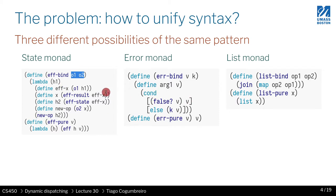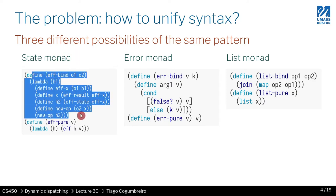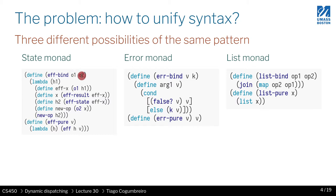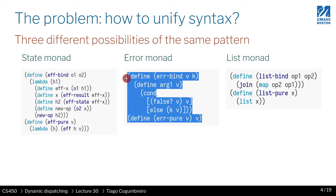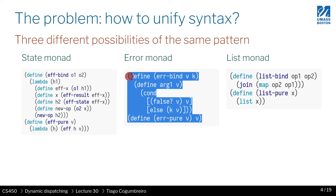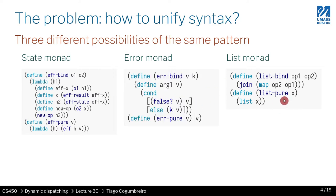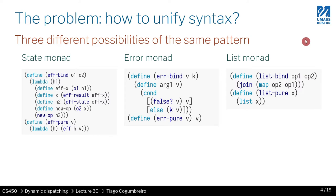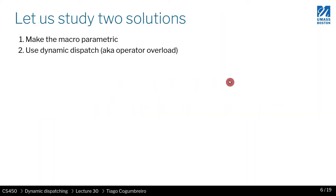If you wanted to make it more general, you could have a generic bind that would dispatch to each different implementation according to the arguments. So if the arguments were a function that returns an eff, you would use the state monad implementation; if it were a function that may return false, you could use error binding; and if it returns a list, you could use the list binding implementation.